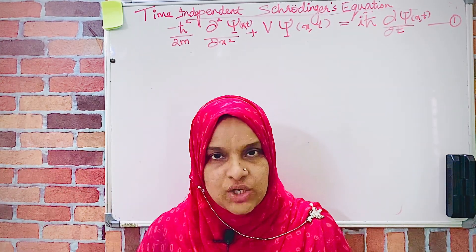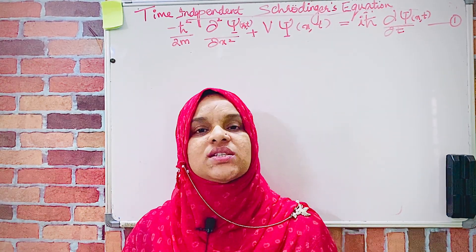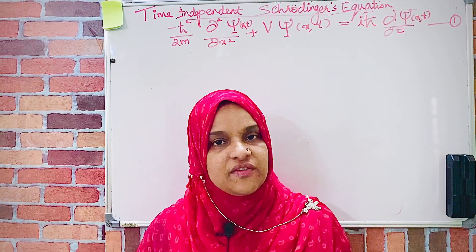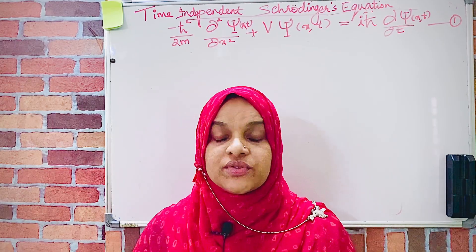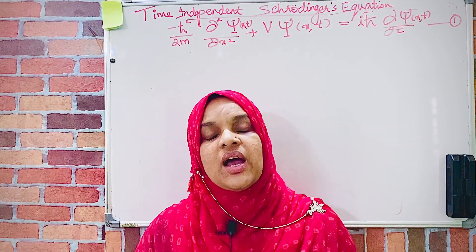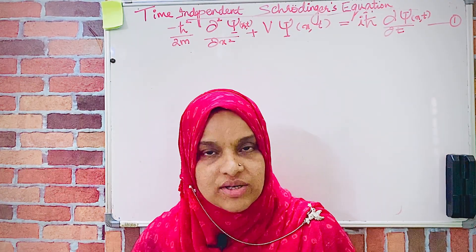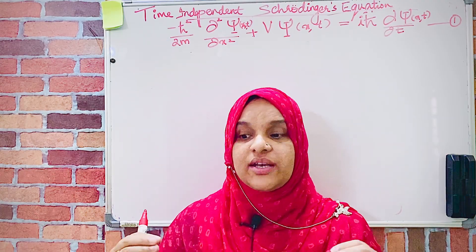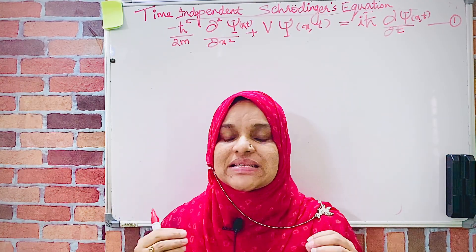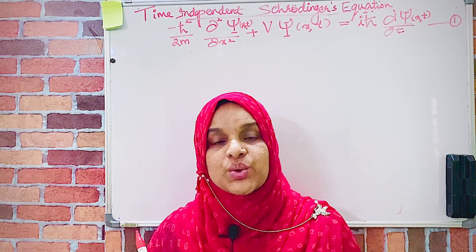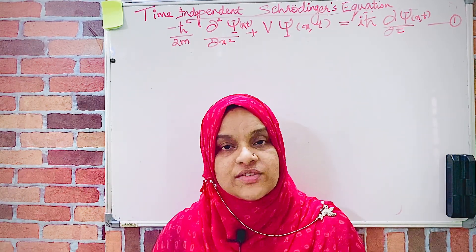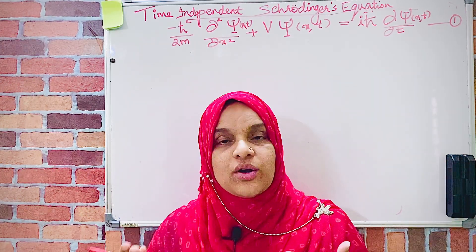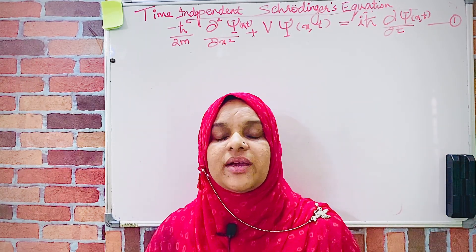That is Schrödinger's time-dependent equation. If you have a system which is moving in a potential that is time-dependent, then we need to solve the Schrödinger equation in the time-dependent form, from which we will get the wave function. From the wave function we can find out all the dynamical quantities of the system.